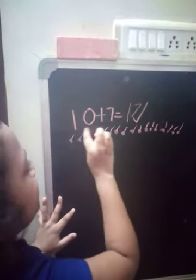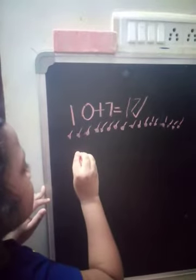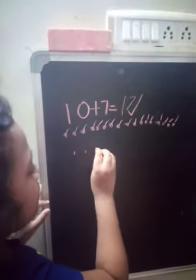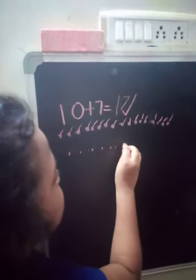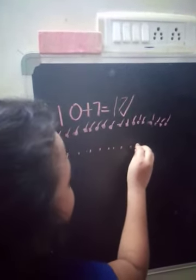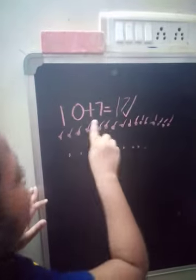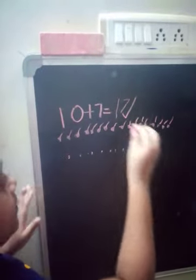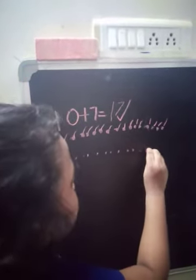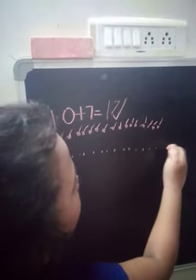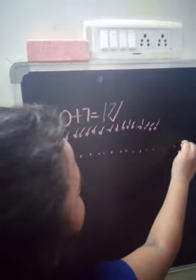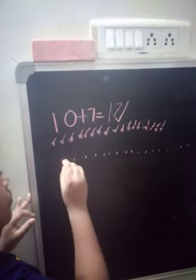I gave her 10 so that she has done plus 10 dots. 1, 2, 3, 4, 5, 6, 7, 8, 9, 10. I gave her plus 7 so that she had 7 dots. 1, 2, 3, 4, 5, 6, 7. Now she has counted the total.